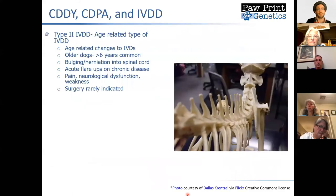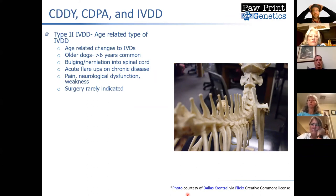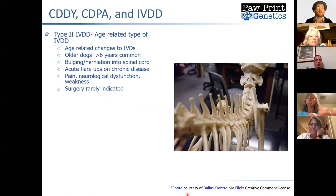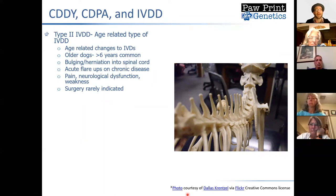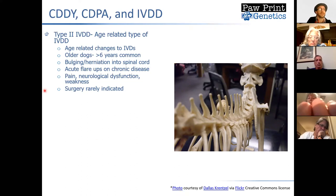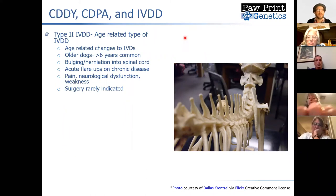Breeds like miniature and toy poodles do carry this CDPA mutation, and I talk with breeders quite a bit about using that to their advantage if their dog's legs are getting too long when they eliminate the other mutation. I don't know that's going to be possible in Boykins, so it's going to be a little more tricky. There are two specific types of intervertebral disc disease we usually talk about in dogs. Type 2 IVDD is an age-related type that essentially any dog is potentially at risk for as they age, most commonly in dogs greater than six years of age.